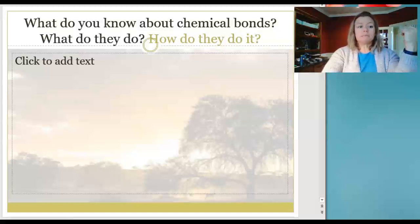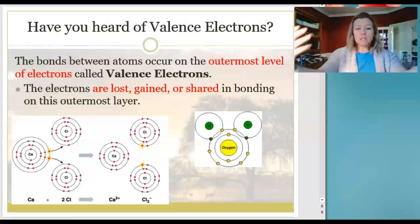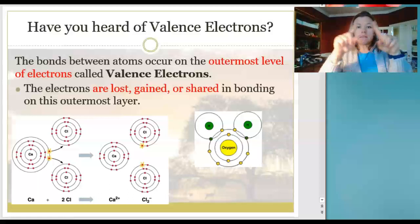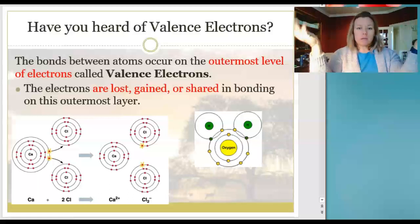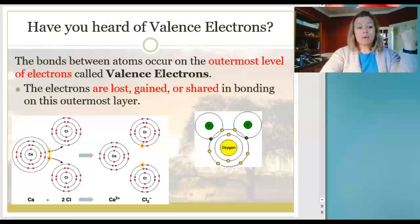Have you ever heard of valence electrons? Because all of the magic of bonding happens with these valence electrons. Valence is something that's around, like around a window. Think around when you think valence, because when we talk about valence electrons as chemists, we're talking about the electrons that are around the outside, the outermost electrons in the series.